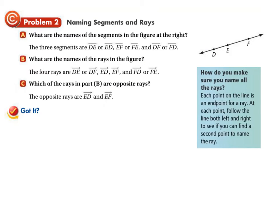For the rays in part B: starting at D, you can go through E or F — ray DE and ray DF are the same ray since both name the same direction. Starting at E, you can go through D as ray ED, or through F as ray EF. Starting at F, you can go through E as ray FE, or through D as ray FD. Remember: each point on the line is a potential end point; follow the line in both directions to find named second points.